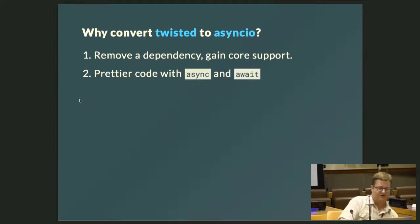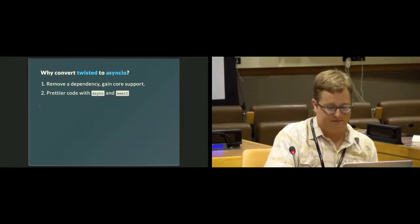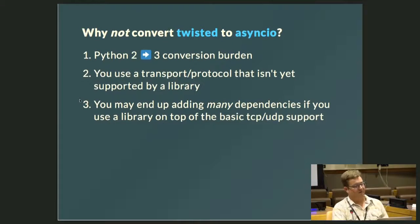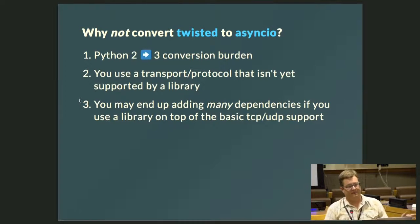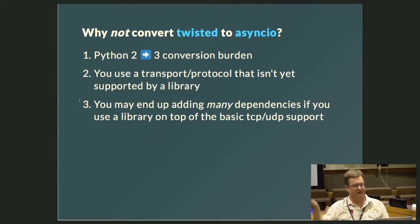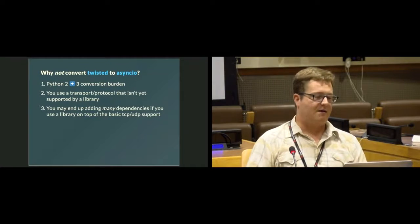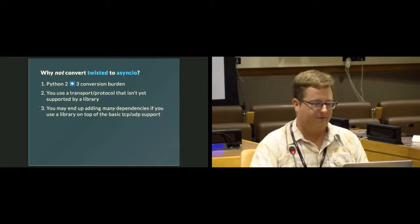So why convert Twisted to asyncIO? One is that you get to remove a dependency and gain core support. Also the code is prettier and smaller with async and await, which definitely adds to maintainability. Reasons why you probably shouldn't: if you can't convert from Python 2 to 3, or if you use a transport or protocol that isn't supported by a library — like if you wanted to write an AOL AIM talk client, you'd probably have to implement it yourself instead of using Twisted. You may also end up adding many dependencies — if you're doing lots of different networking things like SMTP and DNS, you'll need a separate library for each one.